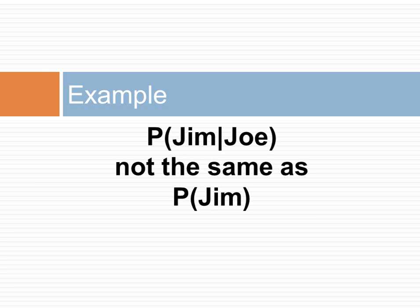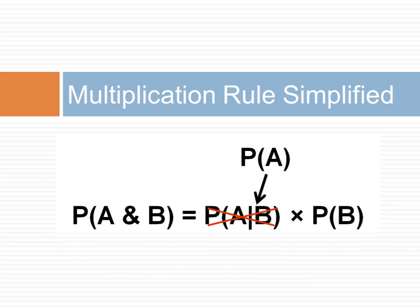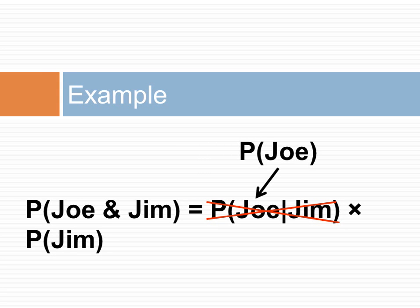This is not always the case. For example, if we know that Jim has an infectious disease, then Joe is more likely to be infected. Therefore, knowledge of Joe's condition tells us about Jim's condition. Under the assumption of independence, the general multiplication rule is simplified so that the probability of both events occurring is the product of the probability of each event. So the probability that both Joe and Jim are diabetic is the product of the probability of Joe being diabetic and the probability of Jim being diabetic.